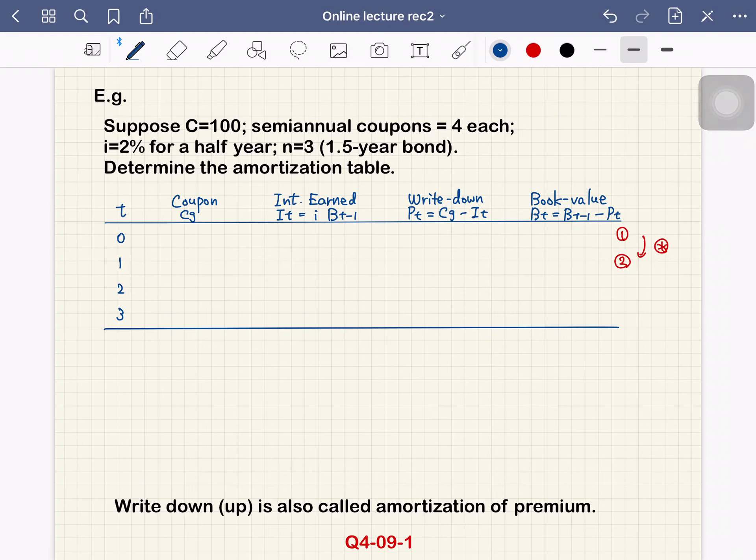Hi everyone. Suppose C equals 100, the redemption value is 100, semiannual coupons are $4 each, so Cg equals 4, and i equals 2% for half year. We have 3 periods, n equals 3, that is a 1.5 year bond. Determine the amortization table.